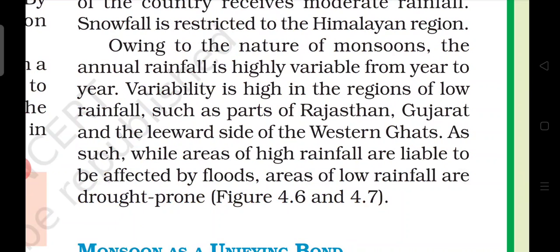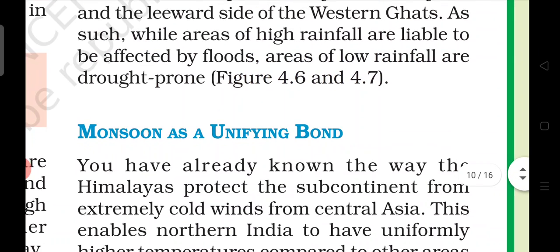While areas of high rainfall are liable to be affected by floods, areas of low rainfall are drought prone. So there are some areas in India where rainfall is so high that there will be floods, and other areas where rainfall is so low there will be drought.